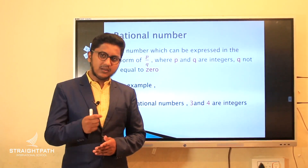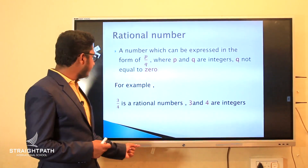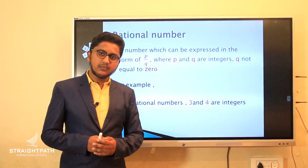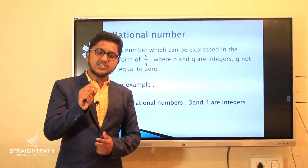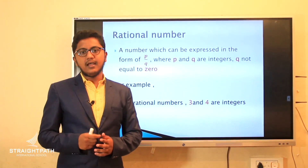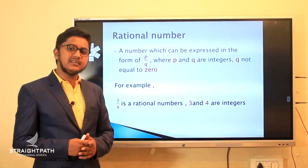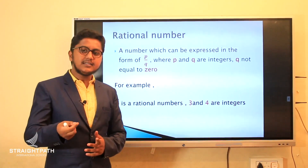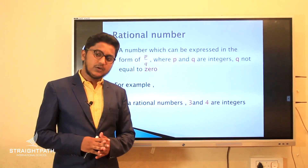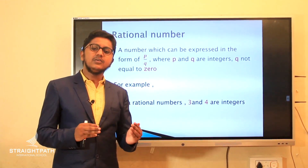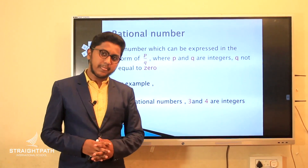For example, 3 by 4 is a rational number. Why? The numerator 3 is an integer and the denominator 4 is another integer, and the denominator 4 will not be equal to 0. So we can see that 3 by 4 is a rational number.